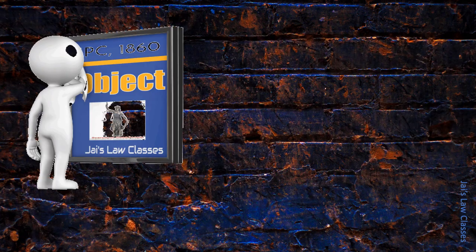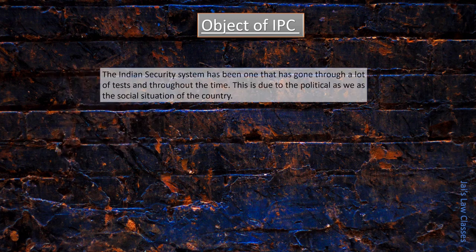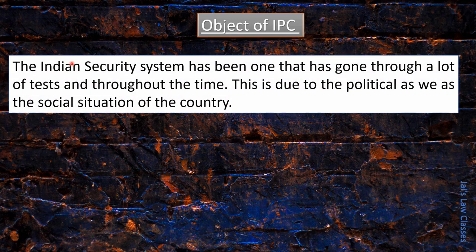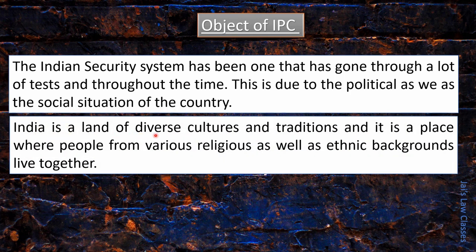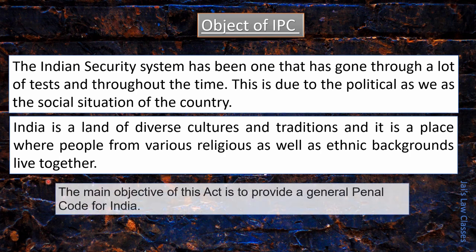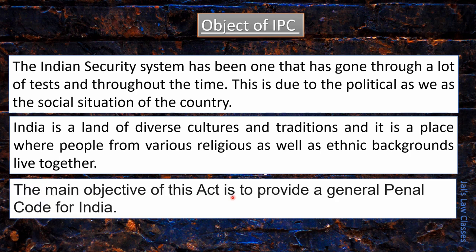What is the object of IPC 1860? The Indian security system has been one that has gone through many tests throughout time, due to the political as well as social situation of the country. Because India is a land of diverse cultures and traditions where people from various religious and ethnic backgrounds live together, the main objective of this act is to provide a general penal code for India.